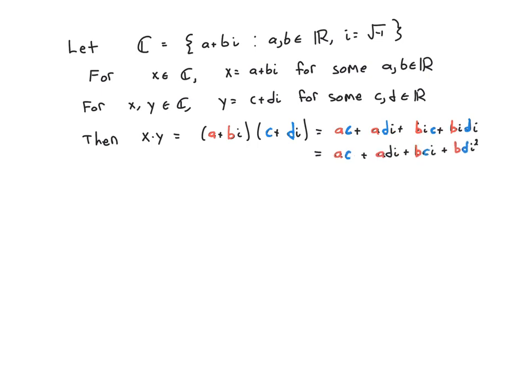And then we can simplify a little bit by moving this i to the right and grouping these two i terms together as i squared. We note that since i is the square root of negative one, i squared is just negative one.